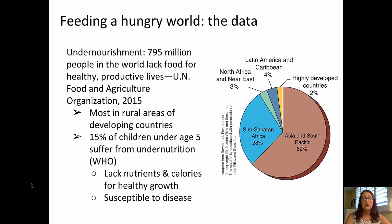However, the data show that there are 795 million people in the world that lack food for healthy, productive lives, and this is 2015 data from the United Nations. In fact, most of those people are in rural areas of developing countries, and the World Health Organization claims that 15 percent of children under the age of 5 suffer from undernutrition. Undernutrition is defined as a lack of nutrients and calories needed for healthy growth, and that makes those children particularly susceptible to disease, on top of the fact that they often have poor health care.